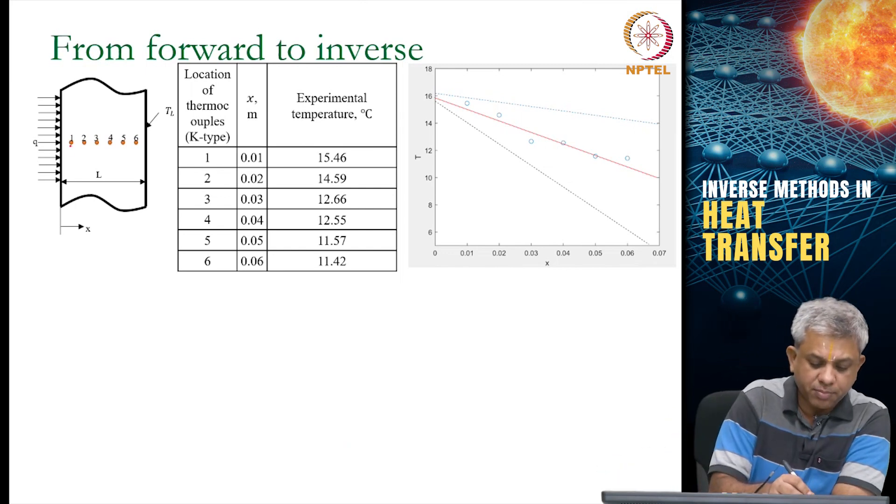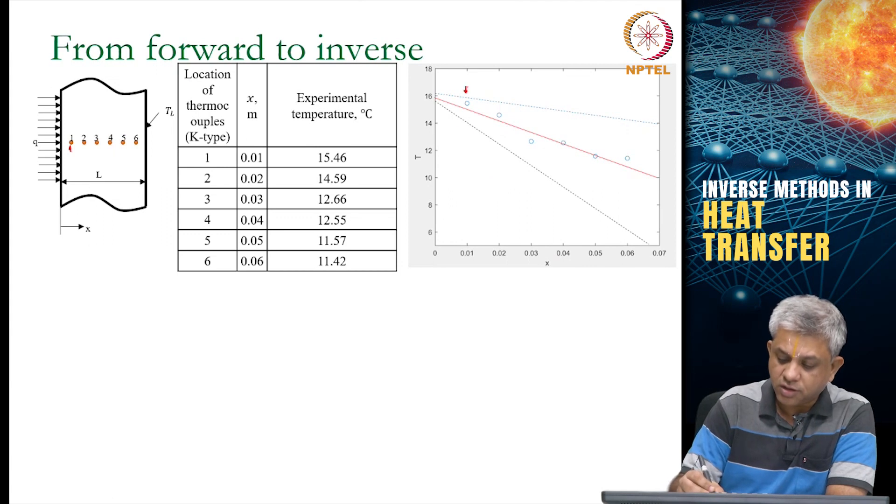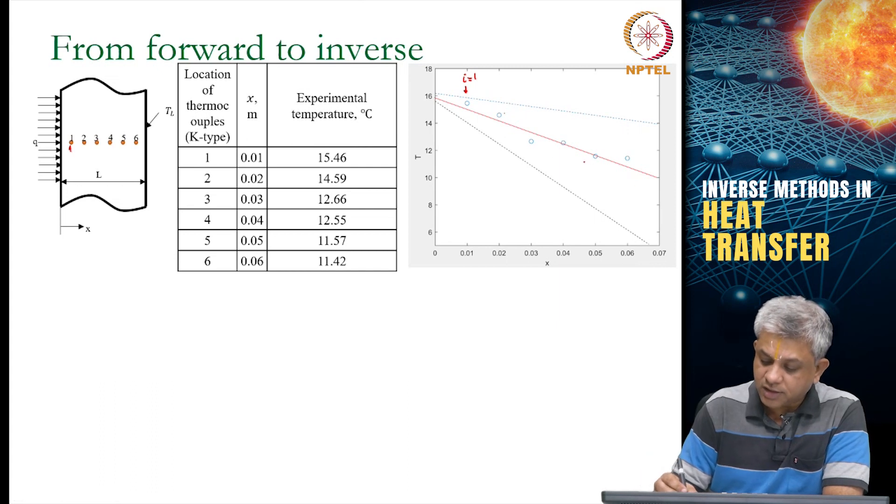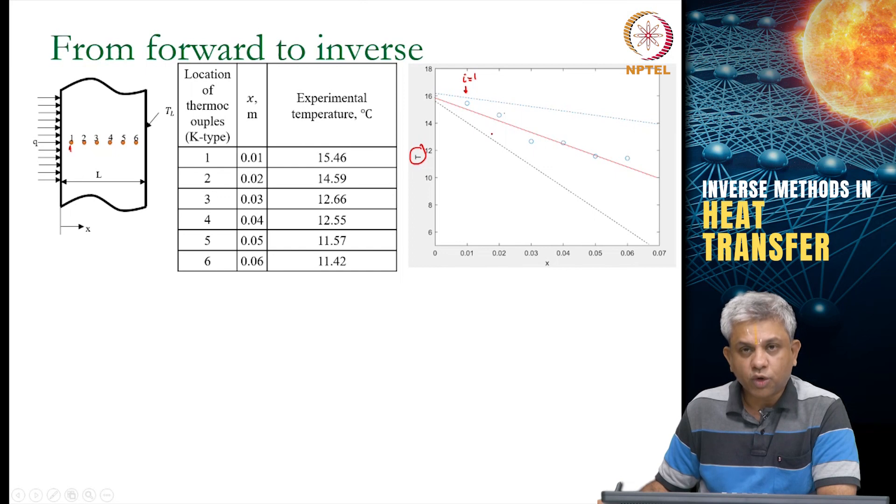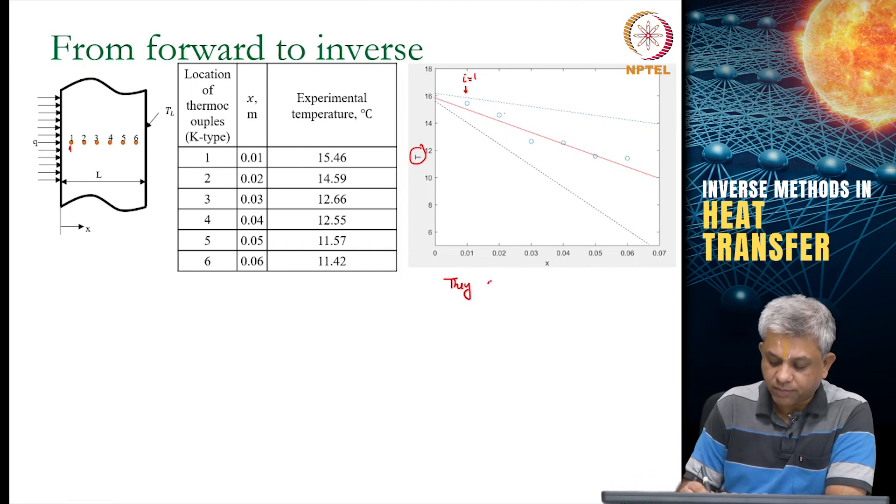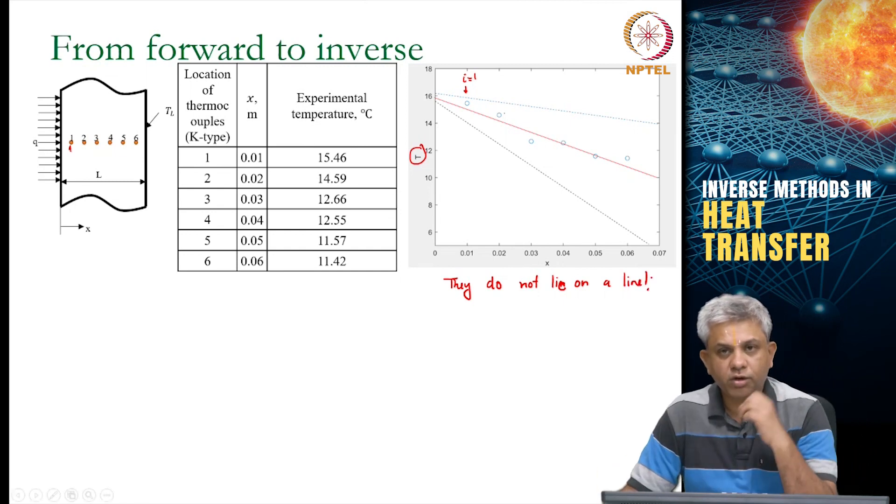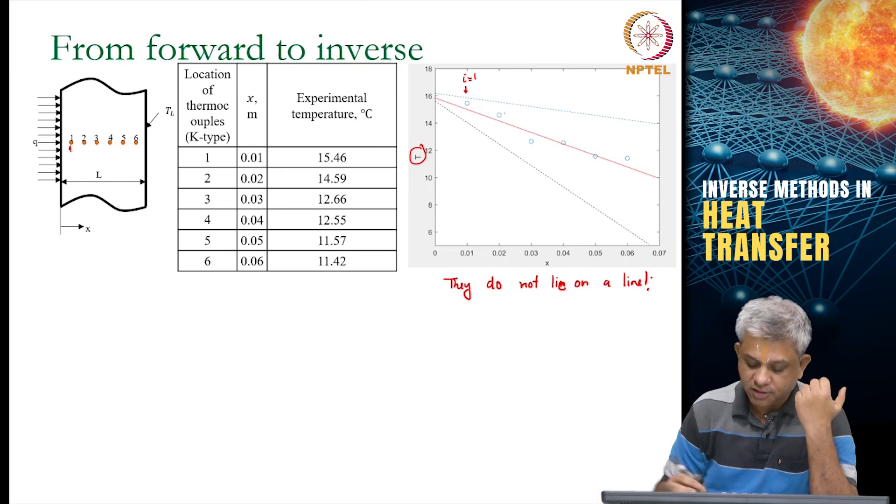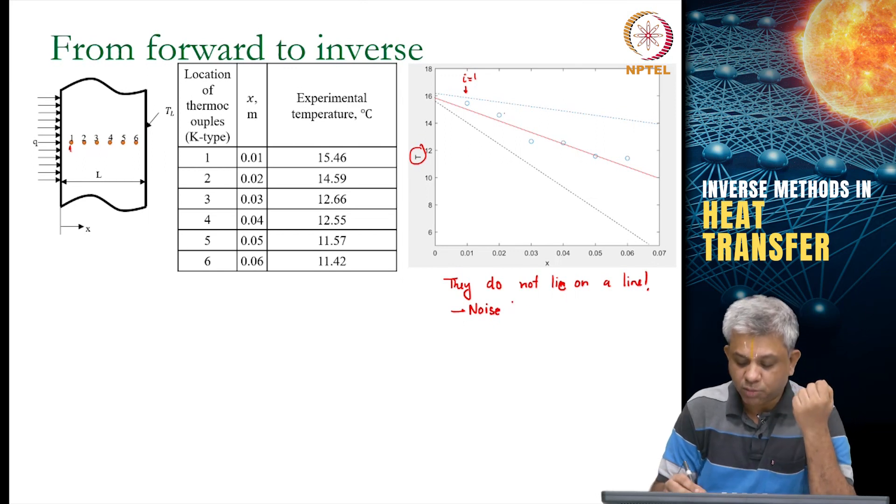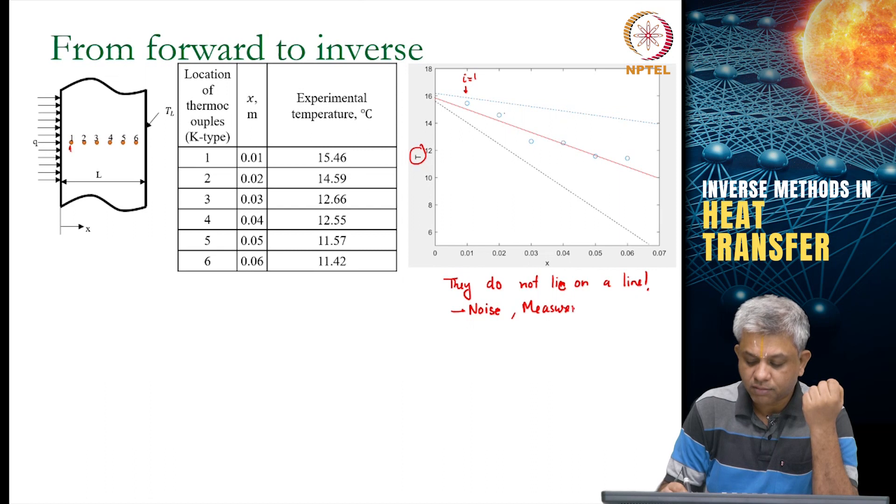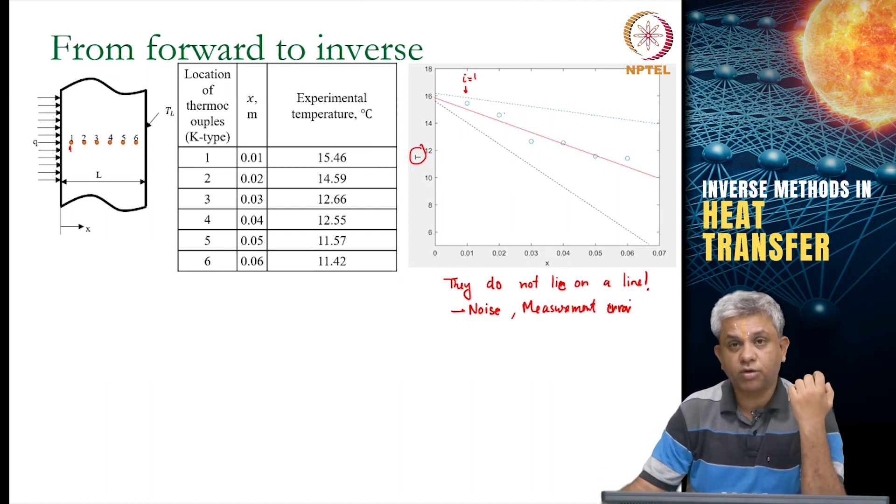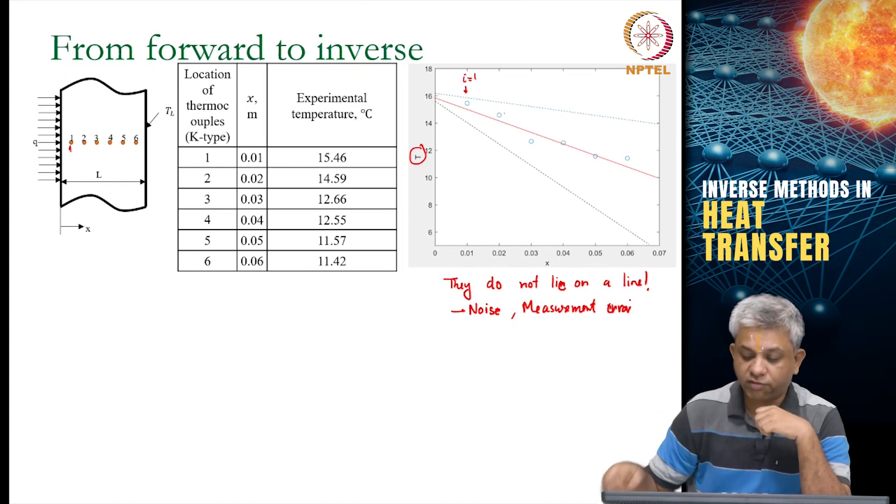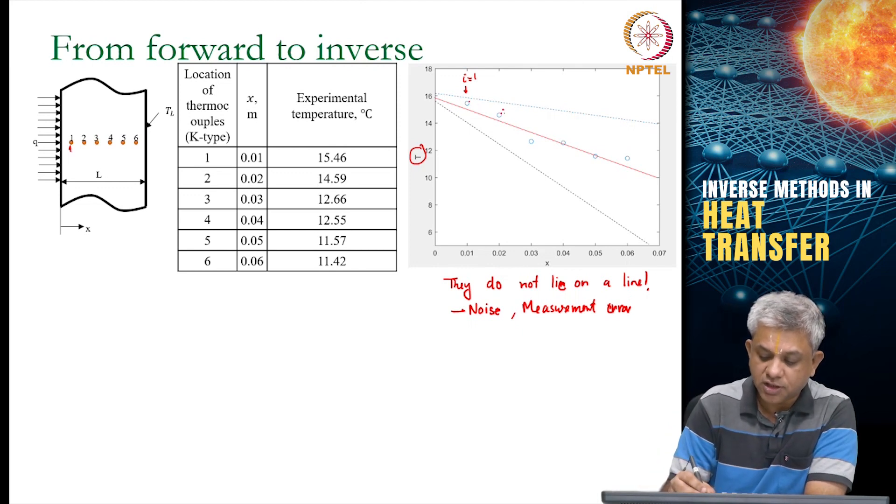Here are the actual temperature measurements plotted. These are the x locations: i equal to 1, i equal to 2, etc. You can see these are the temperature measurements. Notice that they do not lie on a line. As I told you with the ball falling through air, in practice what you are going to see might be noise, maybe due to noise within the thermocouple, maybe due to measurement error, or maybe due to material inhomogeneity.